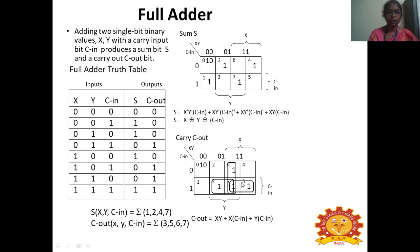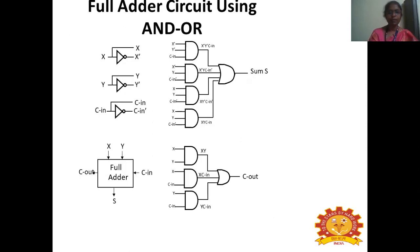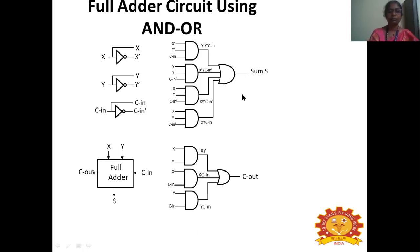For carry output, the min terms are 3, 5, 6, and 7. Plotting in a three-variable K-map, if we group 6 and 7 it gives XY; grouping 3,7 and 5,7 gives the expression XY + XCIN + YCIN. The full adder carry can be realized using AND-OR logic. All product terms are ORed together to form COUT.